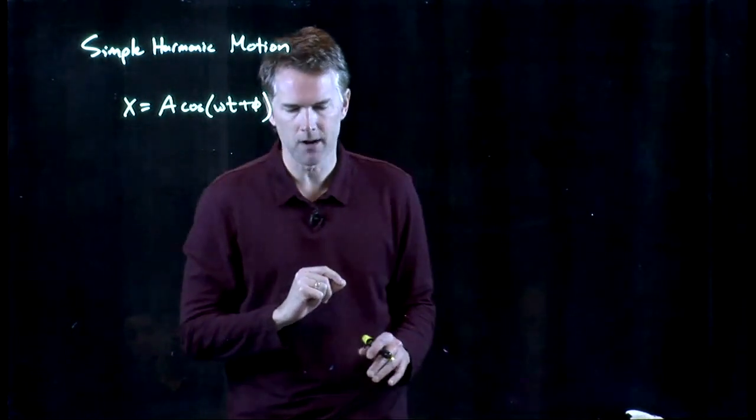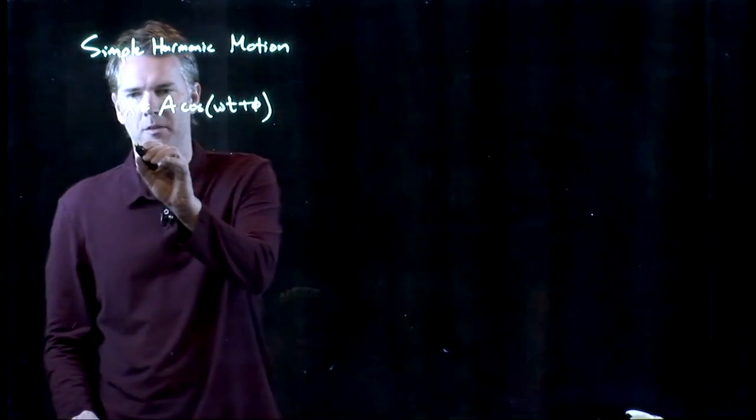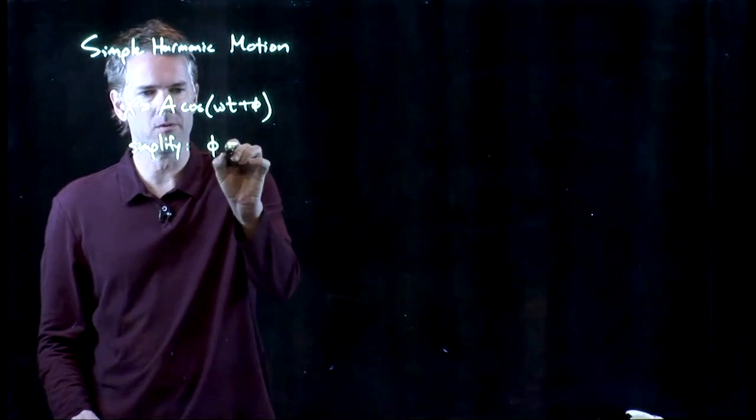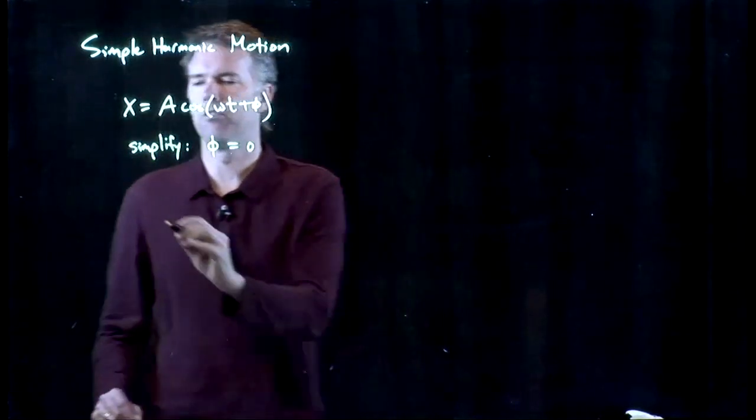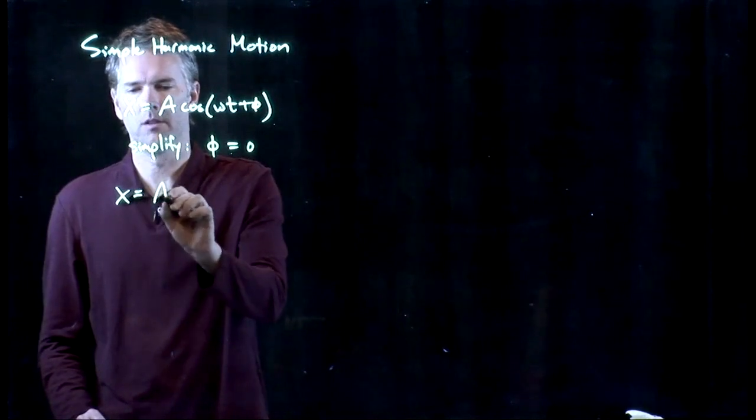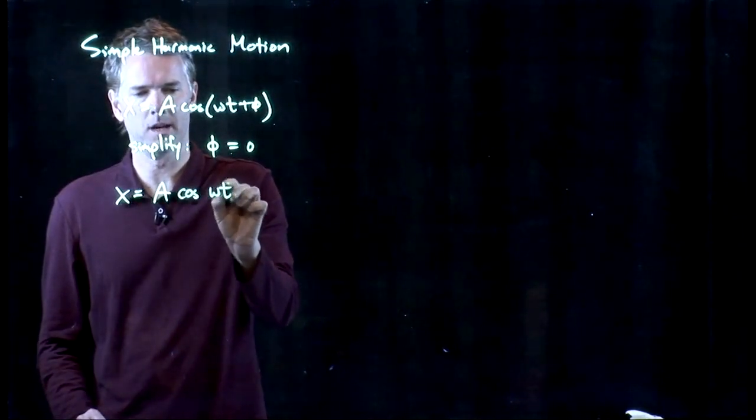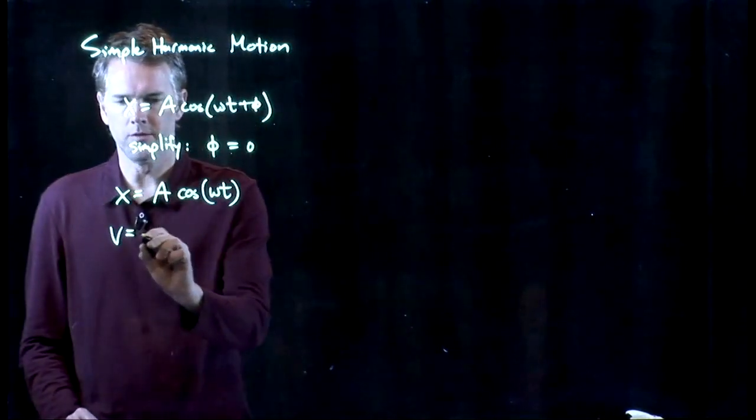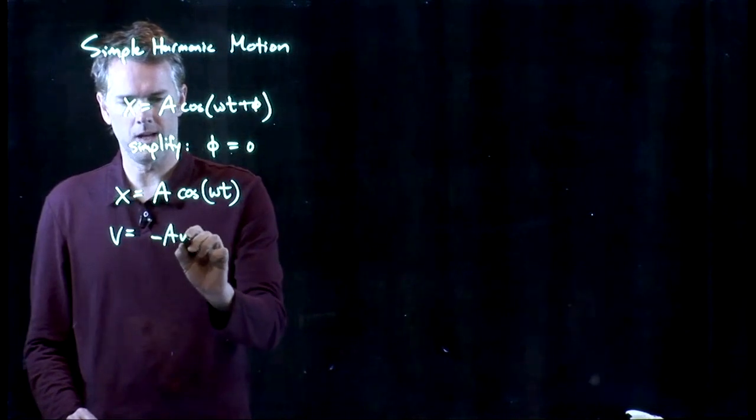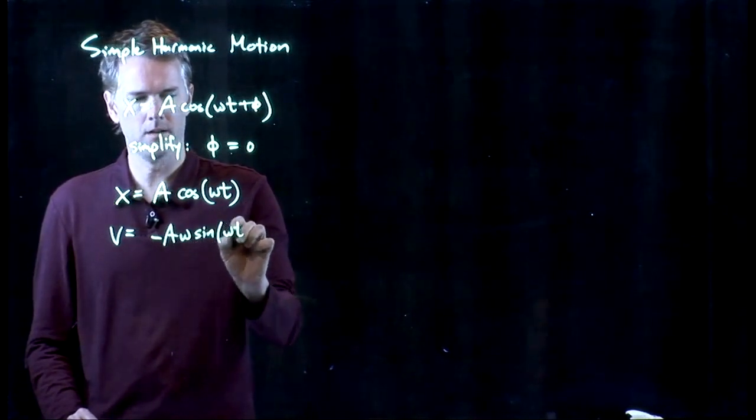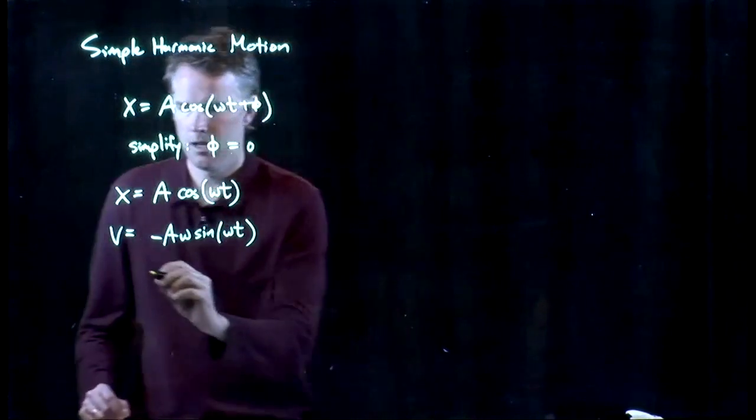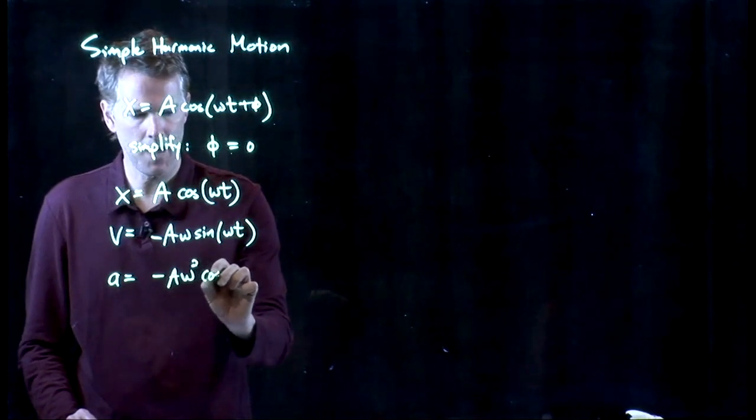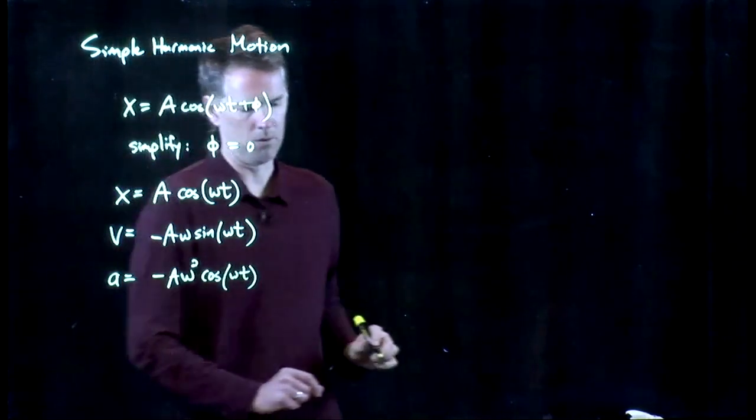So let's plot this out for the following. Let's just simplify and we will let phi equals zero. And if phi equals zero then x is a cosine omega t. What is v? v is the derivative of that which we said is negative a omega sine of omega t. And acceleration is the derivative of that which is negative a omega squared cosine omega t.